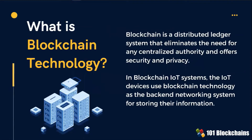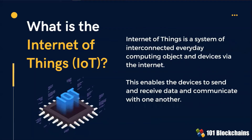In its basic definition, blockchain is a distributed ledger system that eliminates the need for any centralized authority and offers security and privacy. IoT devices use blockchain technology as the back-end networking system to store the data they collect. The Internet of Things, or IoT, is a system of computing objects and devices interconnected via the Internet that send, receive data, and communicate with one another.